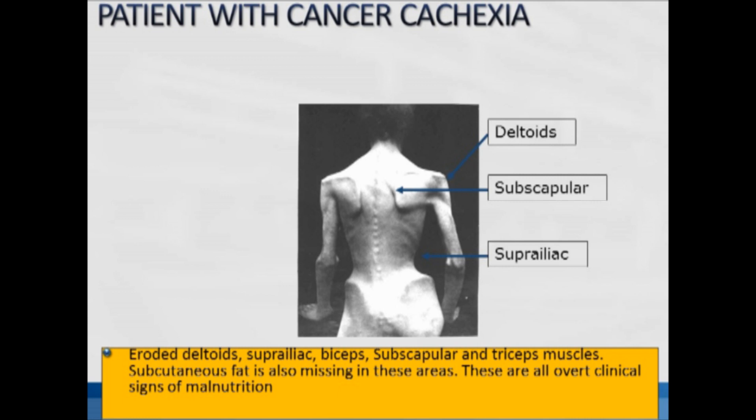In this particular clinical case we have a patient with cancer cachexia — extreme emaciation — with three physical manifestations. The deltoid muscles are basically depleted, forming a square shoulder. The subscapular shows protrusion of the scapula with no fat around that area. The suprailiac, just above the hip, also shows no fat. The eroded deltoid, suprailiac, bicep, subscapular, and tricep muscles are quite evident in this cachexia patient, and subcutaneous fat is missing — these are all overt clinical signs of malnutrition determined by anthropometry.